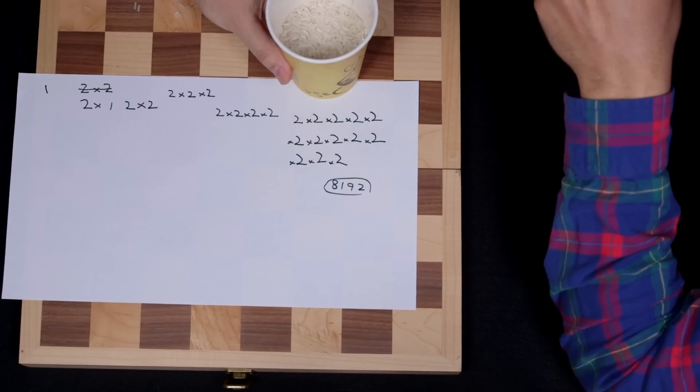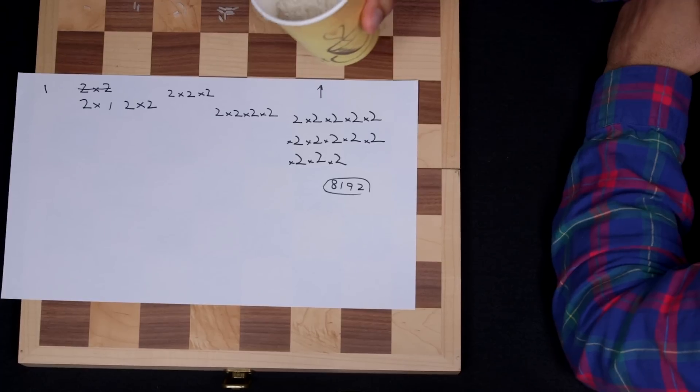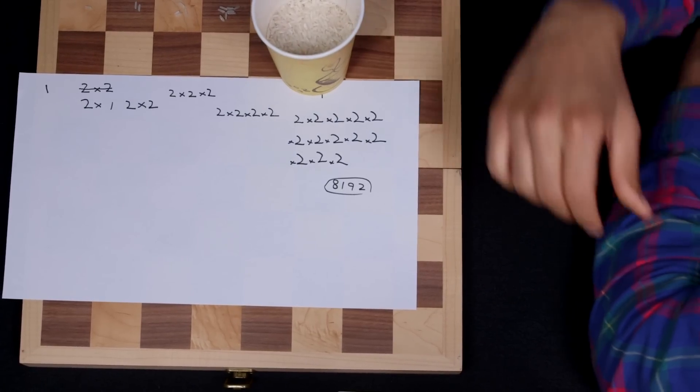8,192 grains of rice is what we should see right over here. And you know, I had fun last night. I was up late. But there you go. Did you really count out 8,192 grains of rice? More or less. Okay. Let's just say you did.